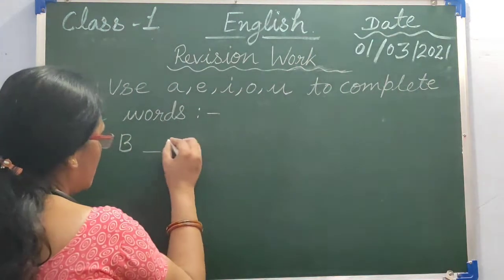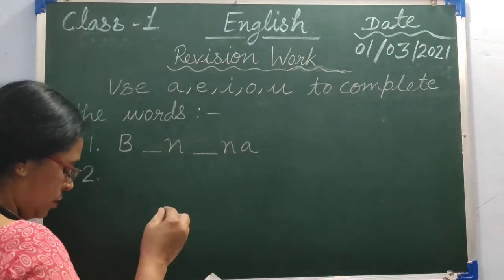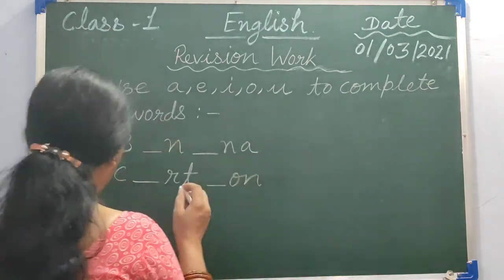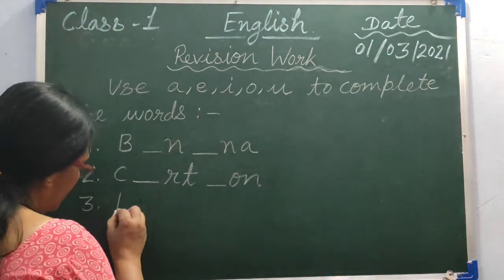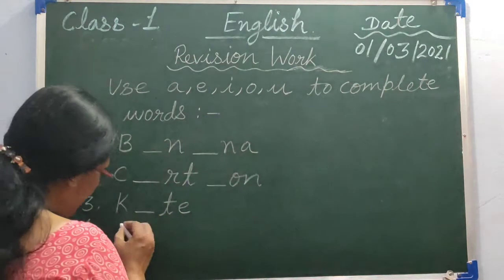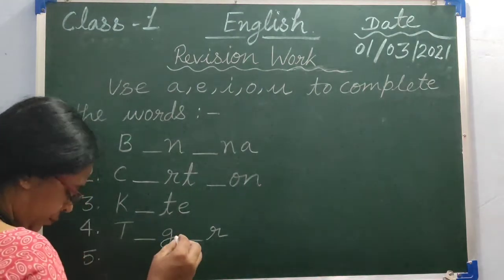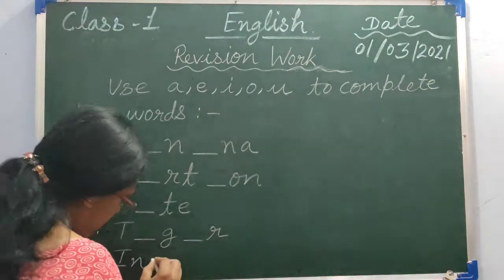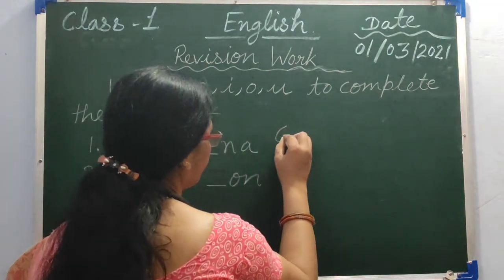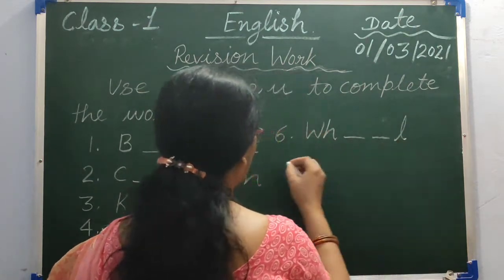Number one: B _ S. Number two: C _ R T. Number three: K _ T _. Number four: T _ G _ R. Number five: I N D _ _. Number six: W H _ _ L. Number seven: S T R _ _ K.